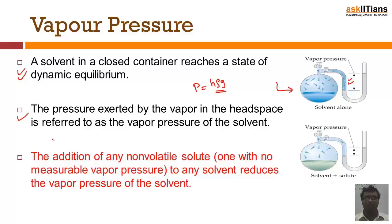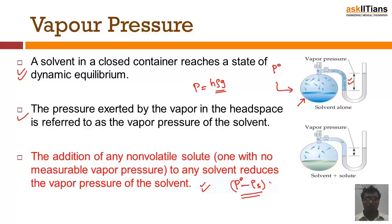The next important point: the addition of a non-volatile solute to a solvent reduces the vapor pressure of that solvent. For example, if the solvent initially has a vapor pressure P₀, then because of the addition of this non-volatile solute, the vapor pressure reduces to P₀ minus Ps. So if you are adding a non-volatile solute to any solvent, it reduces the vapor pressure of the given solvent.